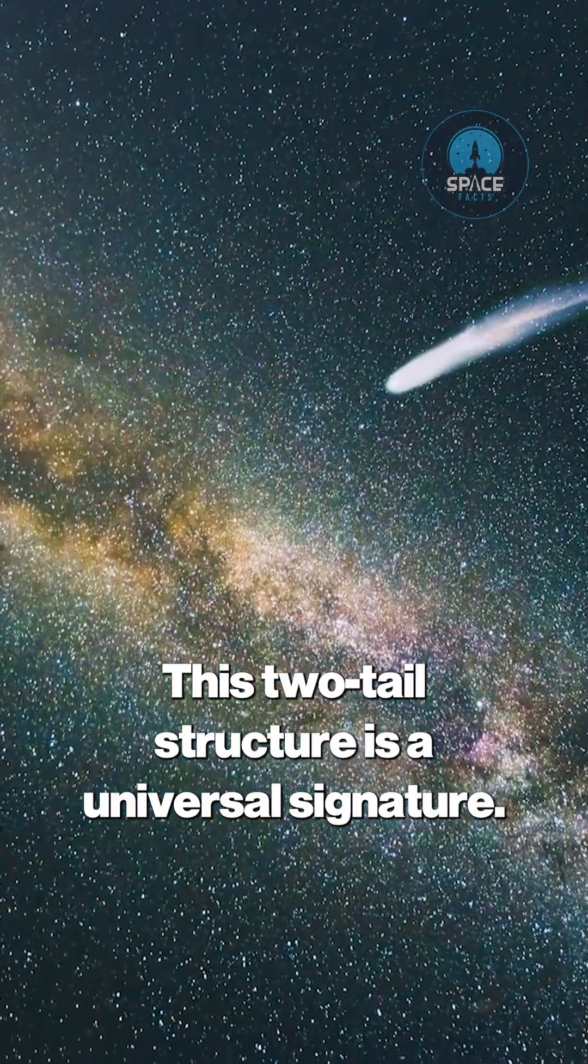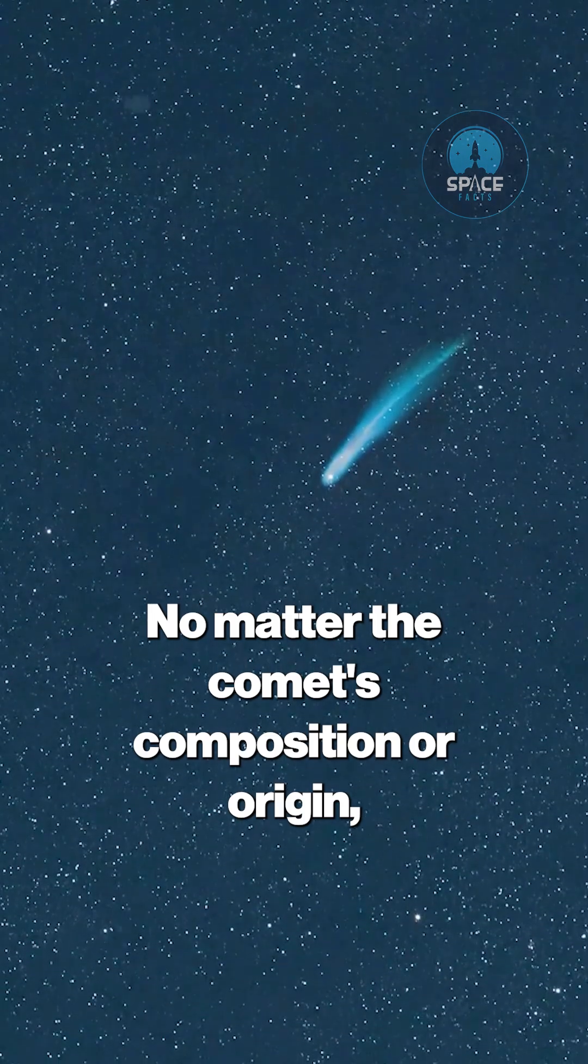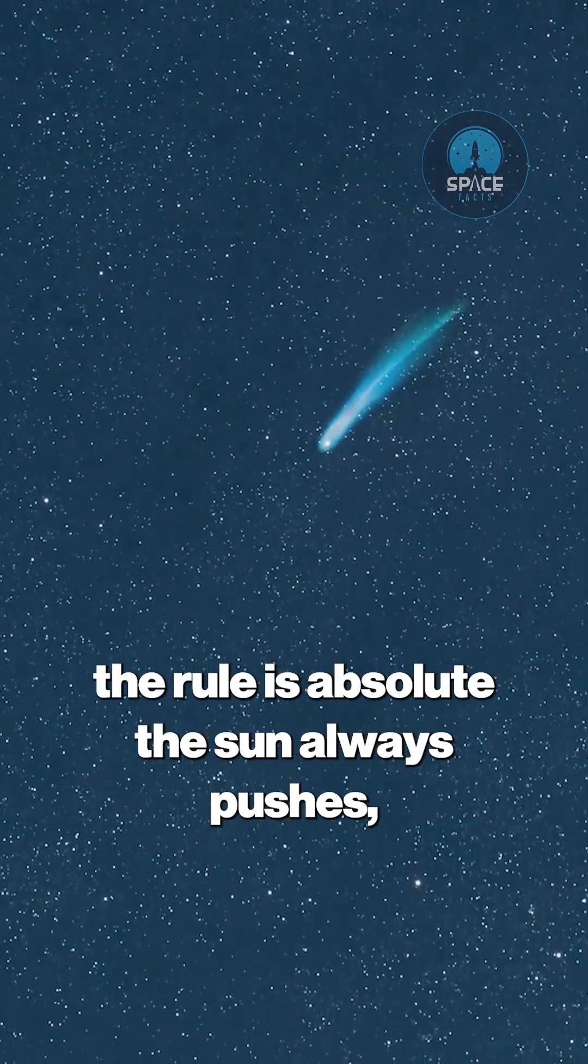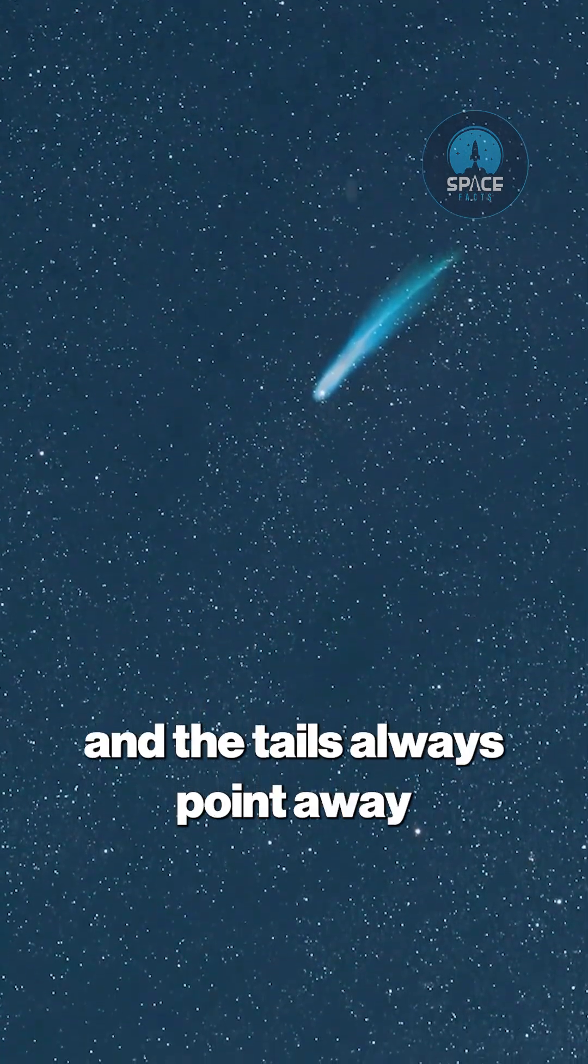This two-tail structure is a universal signature. No matter the comet's composition or origin, the rule is absolute. The sun always pushes, and the tails always point away.